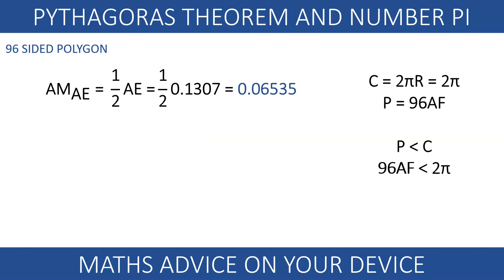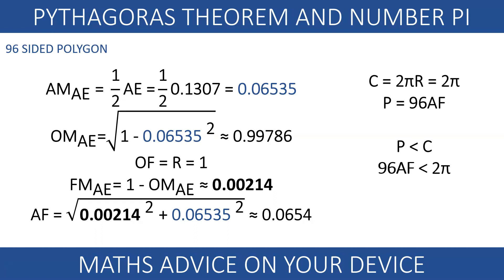Archimedes even used a 96-sided polygon. He figured out that the hypotenuse AF must be 0.0654. Pi must be bigger than 3.1392.